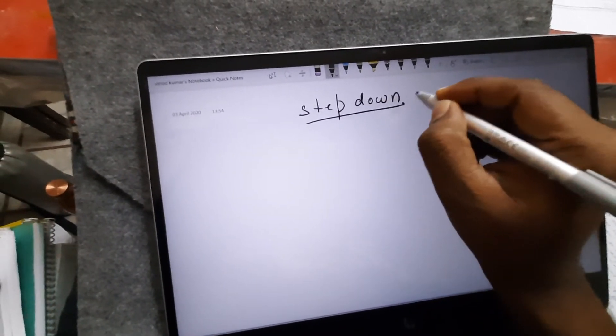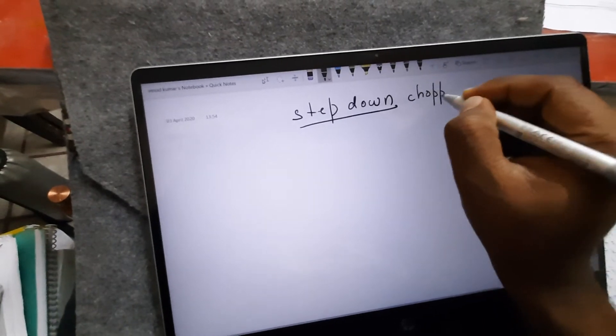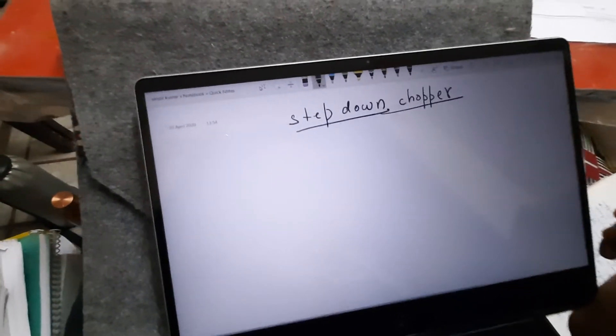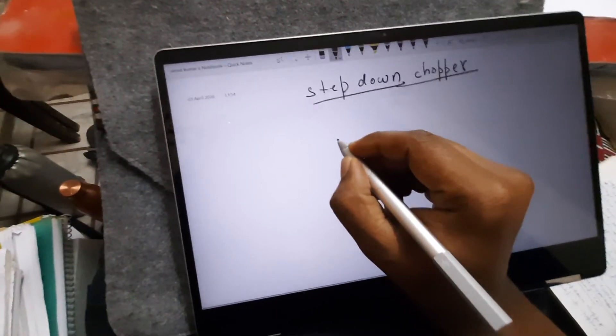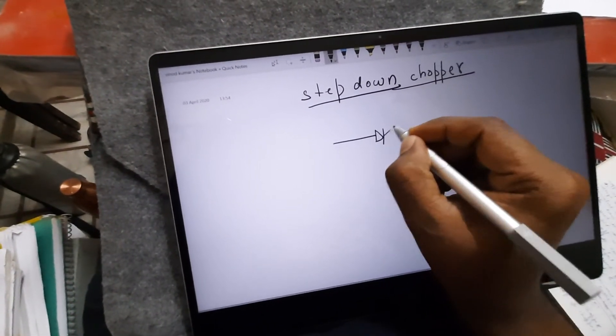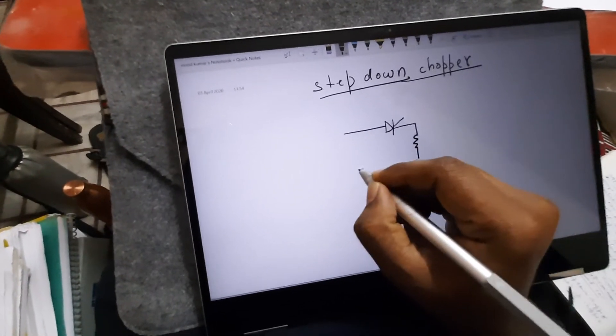Step down chopper, like the name suggests, the average output voltage is less than the input voltage. So here is the basic circuit diagram feeding the R load.